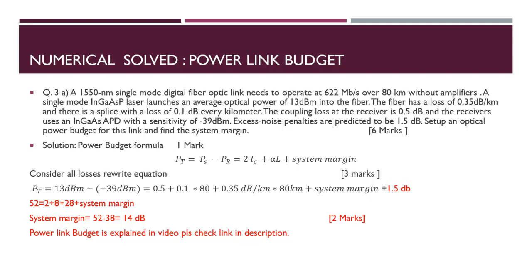So: Pt = 13 − (−39) = 52 dB, which equals 2 + 8 + 28 + system margin. Therefore, system margin = 52 − 38 = 14 dB. This is your answer. For such informative solutions and videos, subscribe to my channel — Finactive. Thank you.